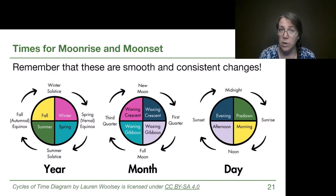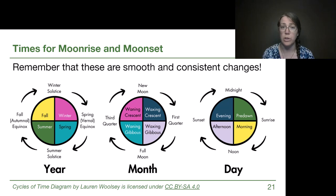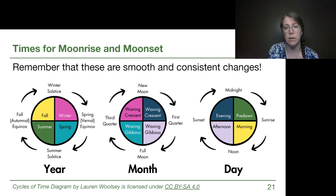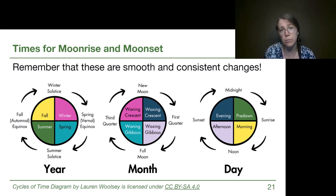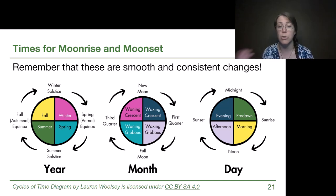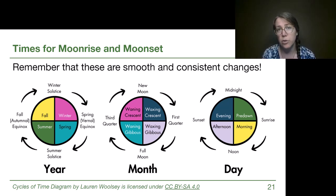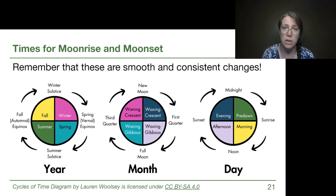One thing I want to mention is a reminder that all of the changes we're talking about are smooth and consistent. We don't go from a new moon to a perfect halfway crescent overnight. Every single moment things are slowly shifting, and we have special terms for the extremes: the extremes of the year are the winter and summer solstice, the extremes for the month are new moon and full moon, and the extremes for a day are midnight and noon.